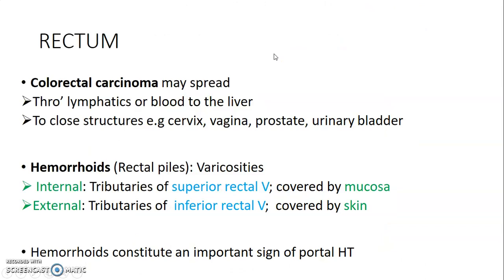Moving to applied anatomy of the pelvic viscera, starting with the rectum. Colorectal carcinoma — cancer of the rectum and colon — may spread through lymphatics or through blood to the liver. It may also spread to nearby structures like the cervix, vagina, prostate, and urinary bladder, which is why the relations of these organs are important. The rectum is supplied by superior and inferior rectal vessels. We have internal and external hemorrhoids — hemorrhoids are enlarged rectal veins. Internal hemorrhoids are due to enlargement of tributaries of superior rectal veins covered by mucosa, while external hemorrhoids are varicosities of tributaries of inferior rectal veins covered by skin.